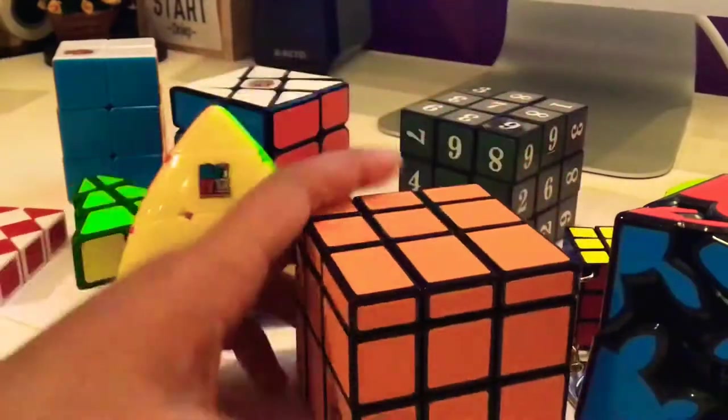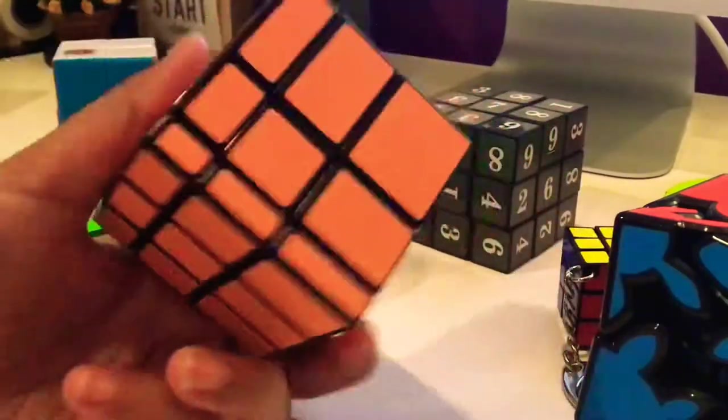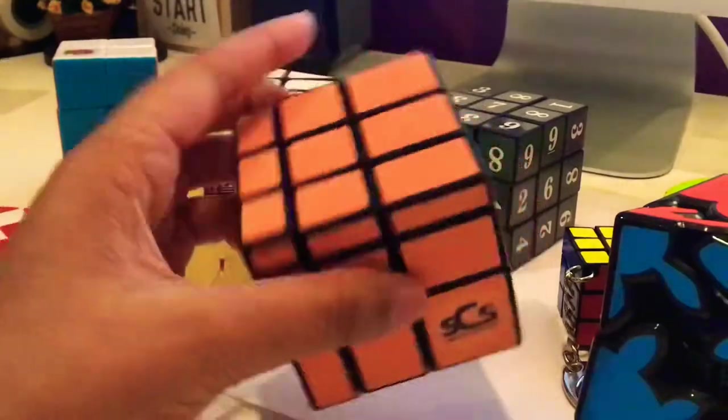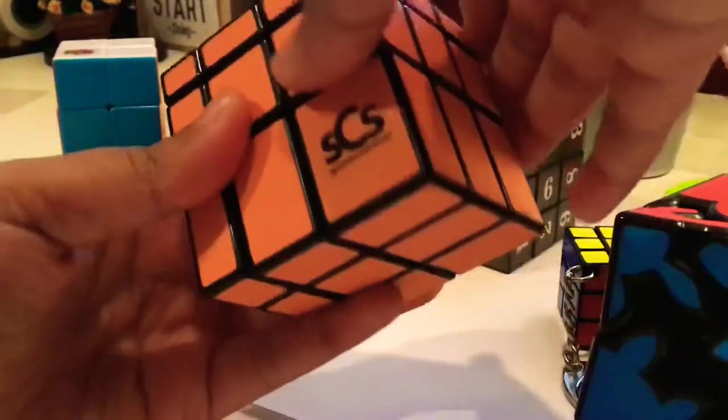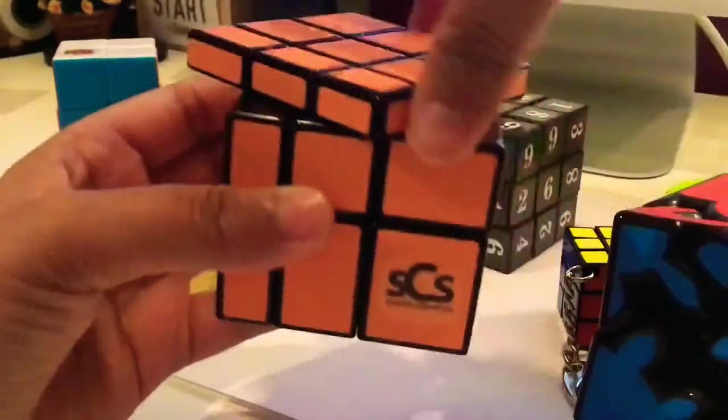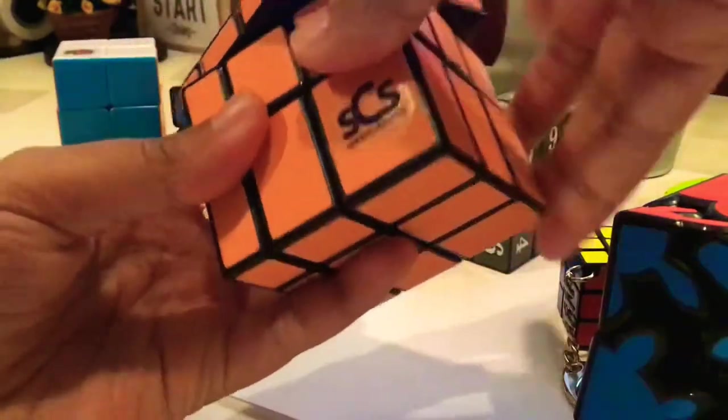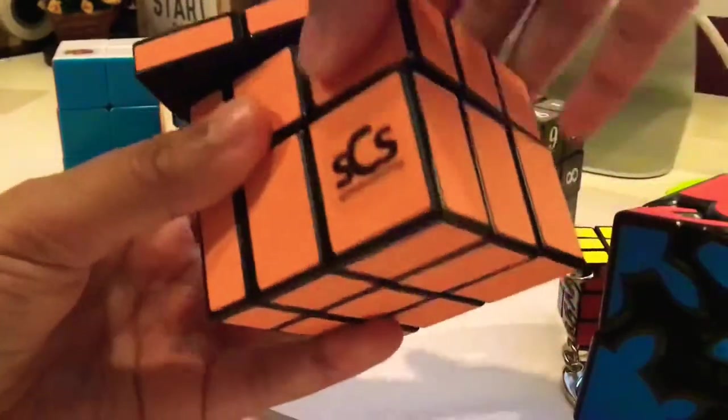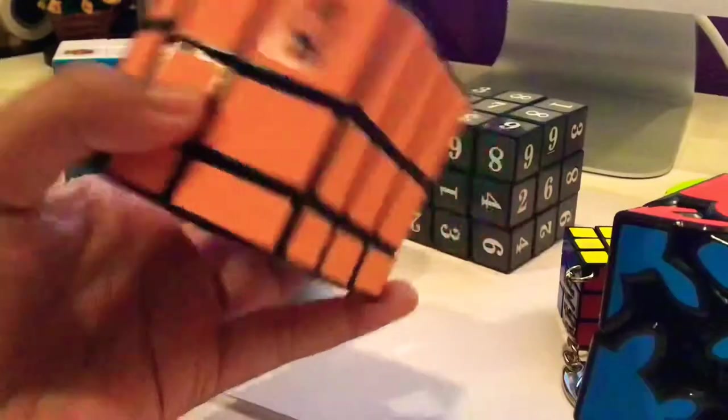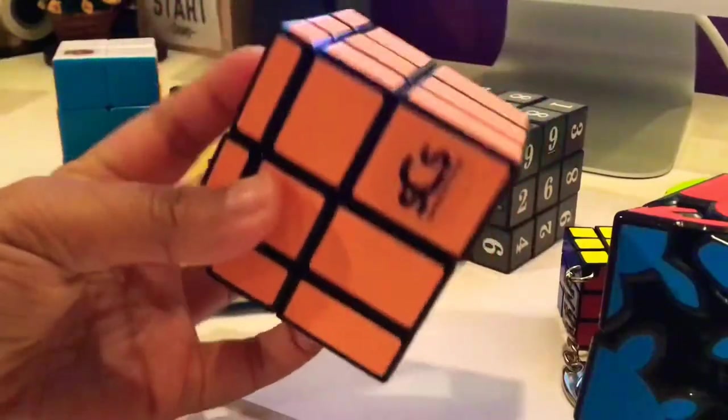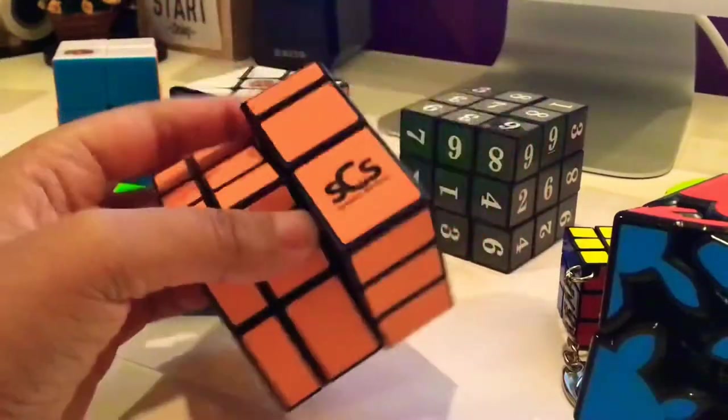Next up I have this shape mod or it's like a mirror cube and it's in orange, but it's like extremely smooth. This is so good, it's better than most mirror cubes. It can even corner cut and everything. It has extremely smooth turning which is what I really love about it, and it's also really fun to solve.